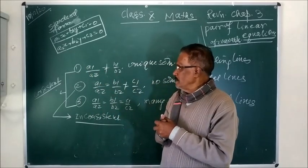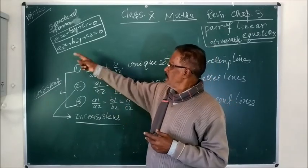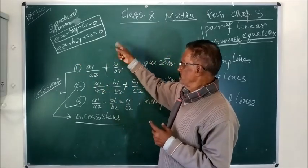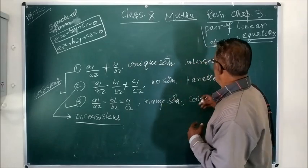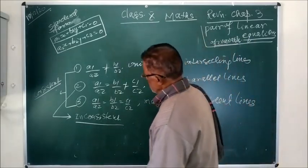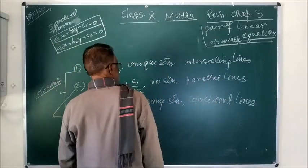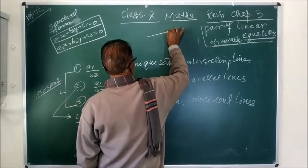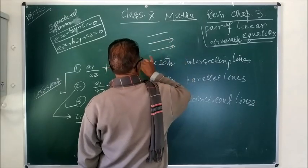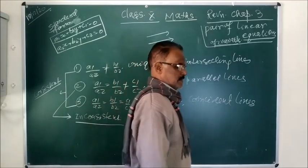So A1 is the coefficient of x, B1 is the coefficient of y, and C1 is the constant term. Similarly in the second equation. So these are the standard form of a pair of linear equations of two variables. Now I will show you how to solve using many methods: method of substitution, method of elimination, graphical method, and cross multiplication method.